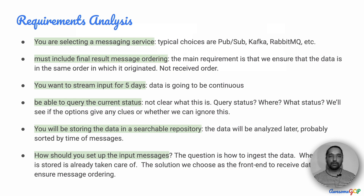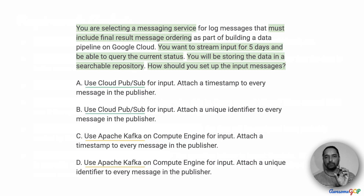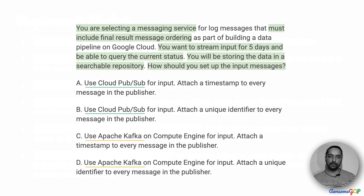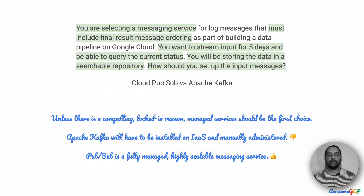Having understood the requirements, let's move on to the options. The options contain a few key parts that are repetitive, so this is one of those questions where if we identify the similar parts, we will be able to quickly eliminate some of them. One of the options is to either use Pub/Sub or to use Apache Kafka. The second set of options is to attach a timestamp with every message or attach a unique identifier. Let's first look at a comparison of Pub/Sub and Apache Kafka.